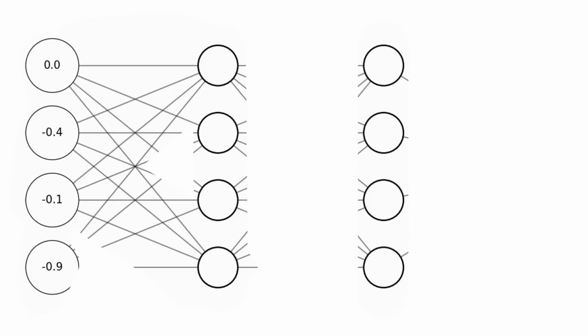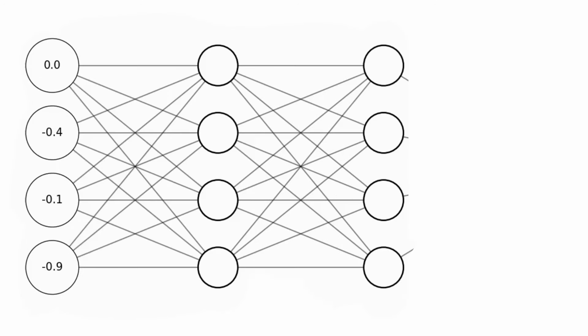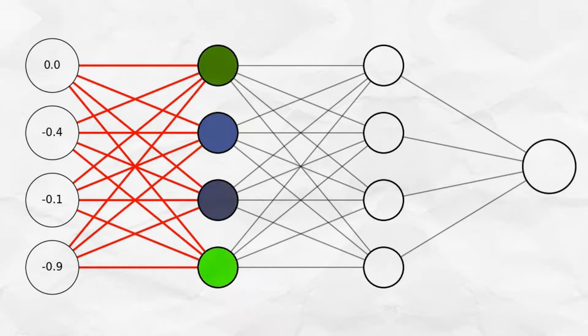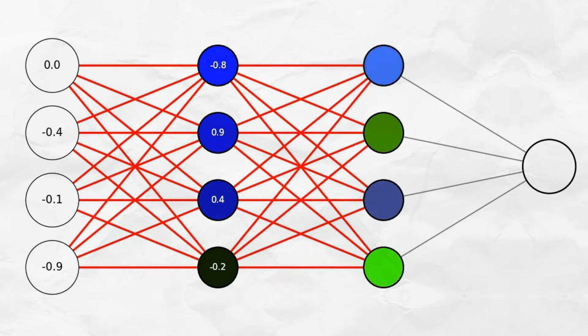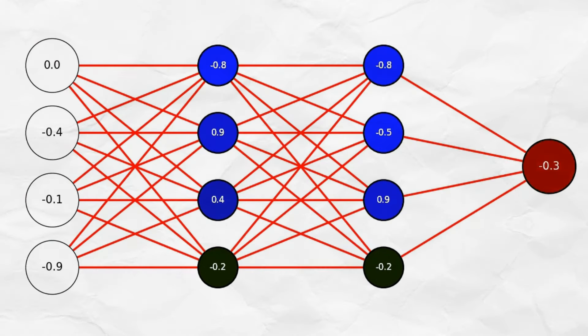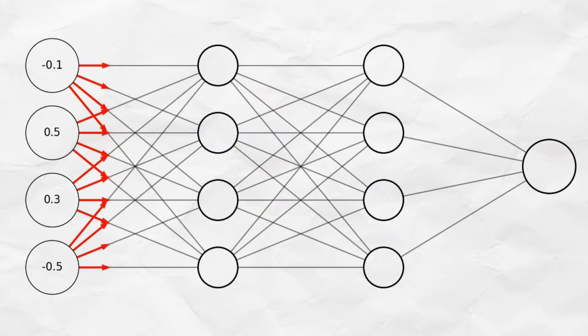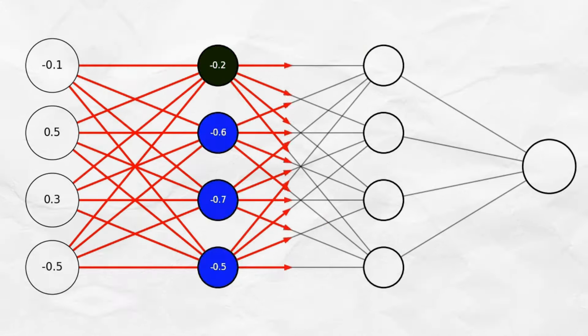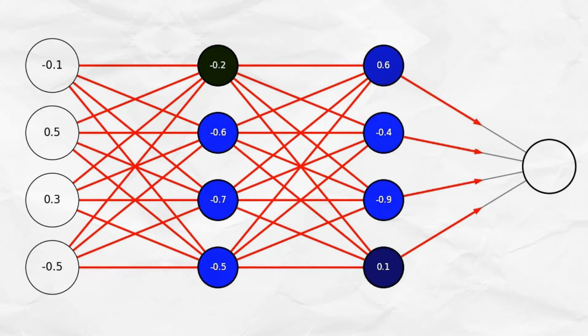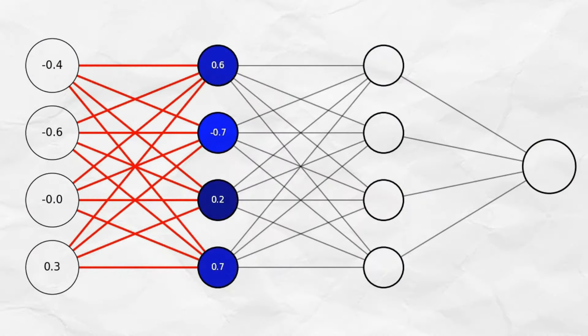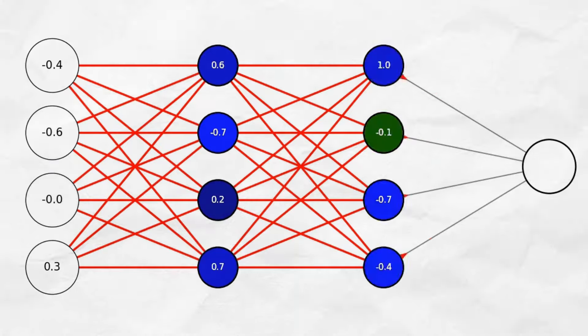Let's consider the feed-forward or MLP network. Each layer in an MLP makes a non-linear projection of its previous layer's output and transforms it into a new space. More layers mean more complex non-linear representations between the input and the output, but they do not make any assumptions about the input's spatial or sequential structure.